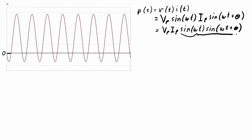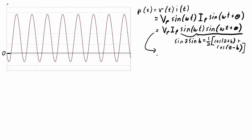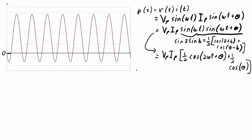This expression follows the pattern of sin(a)·sin(b), where a is ωt and b is ωt + θ. Using the trigonometric identity, sin(a)·sin(b) = ½[cos(a − b) + cos(a + b)], and applying that pattern to our equation, we get Vp·Ip times ½·cos(2ωt + θ) plus ½·cos(θ).